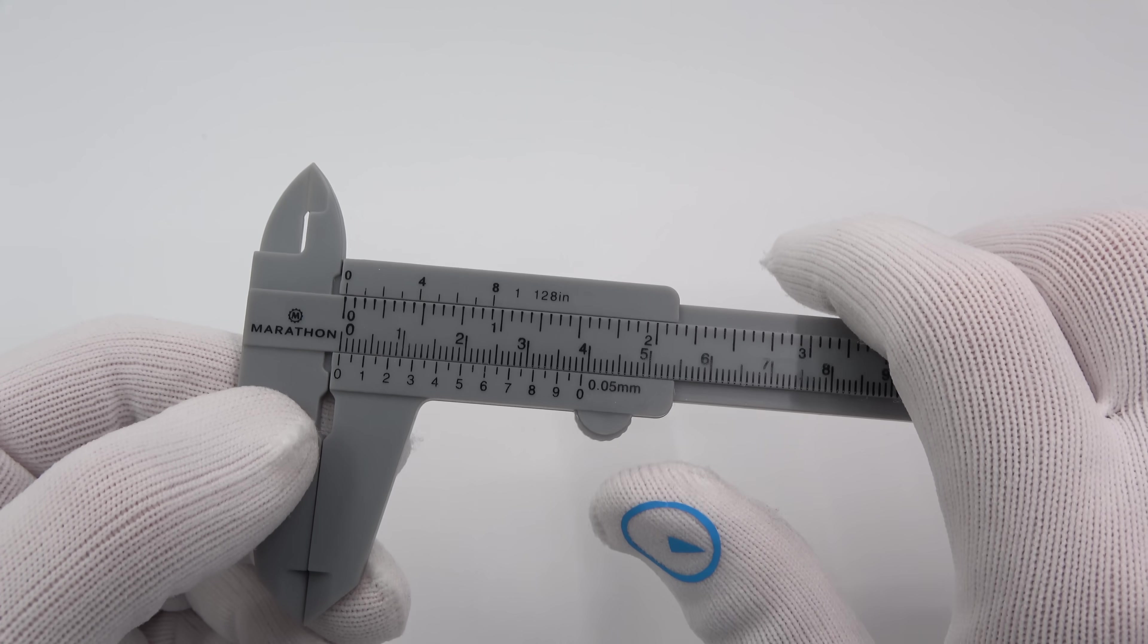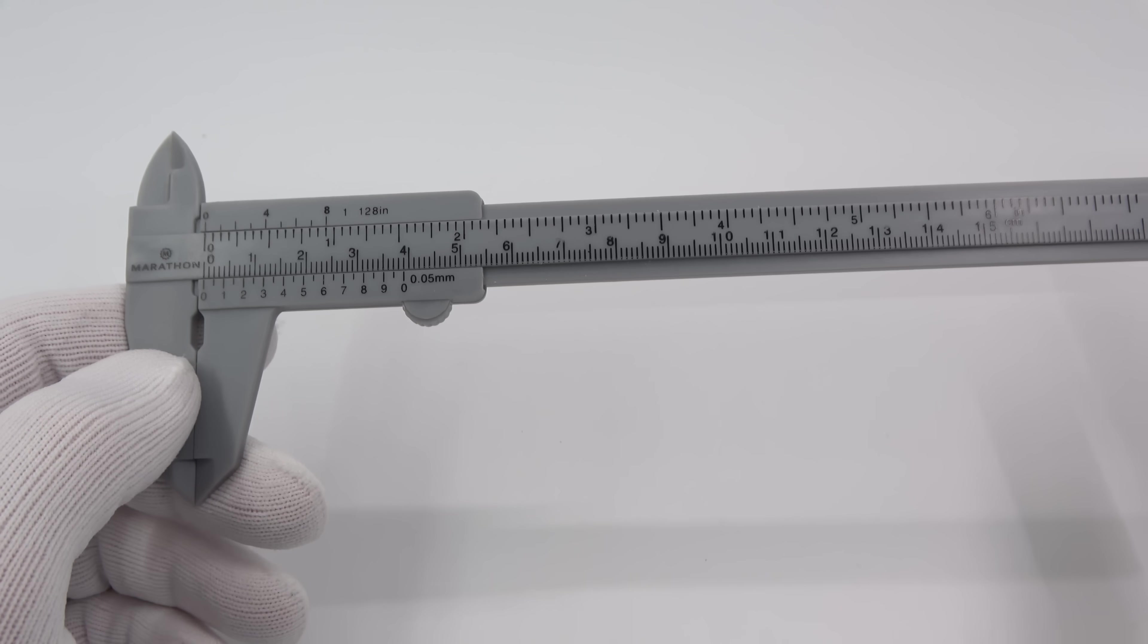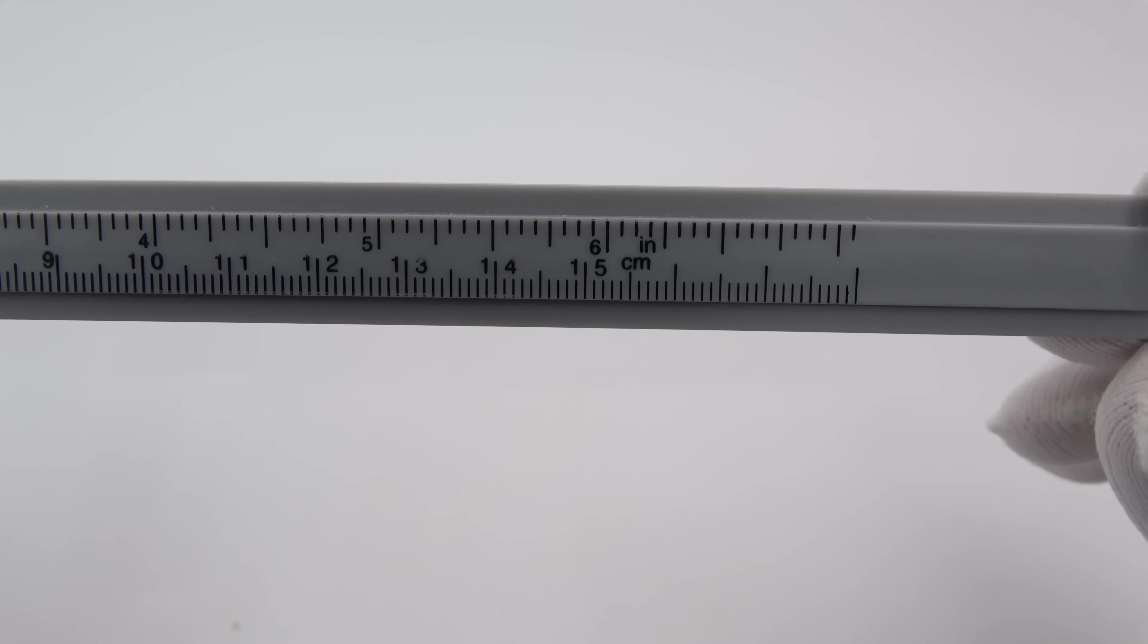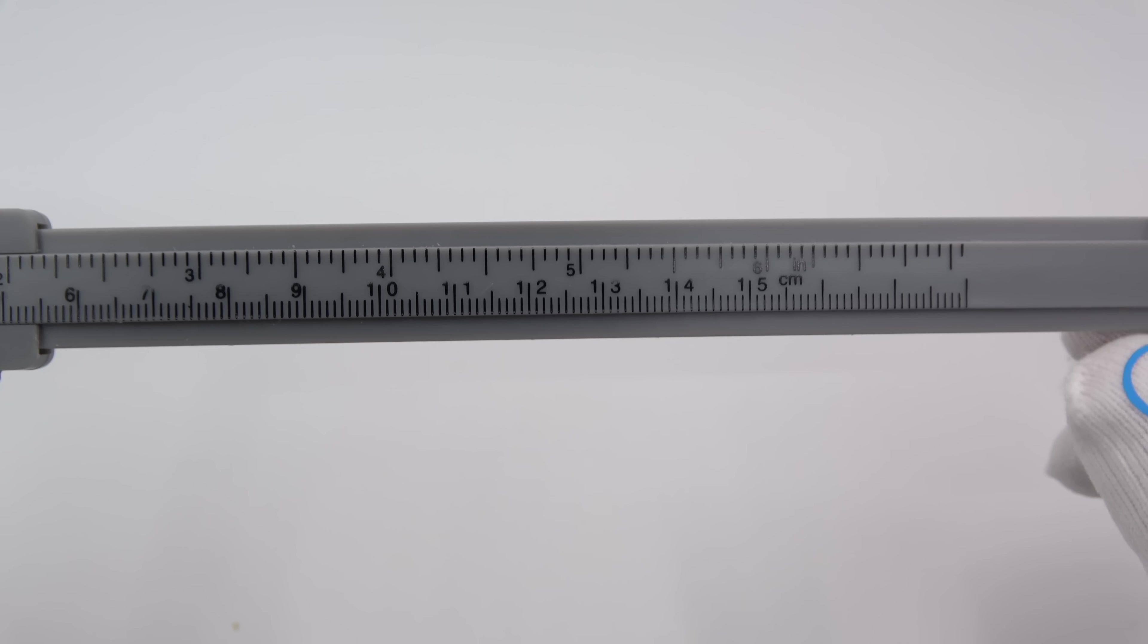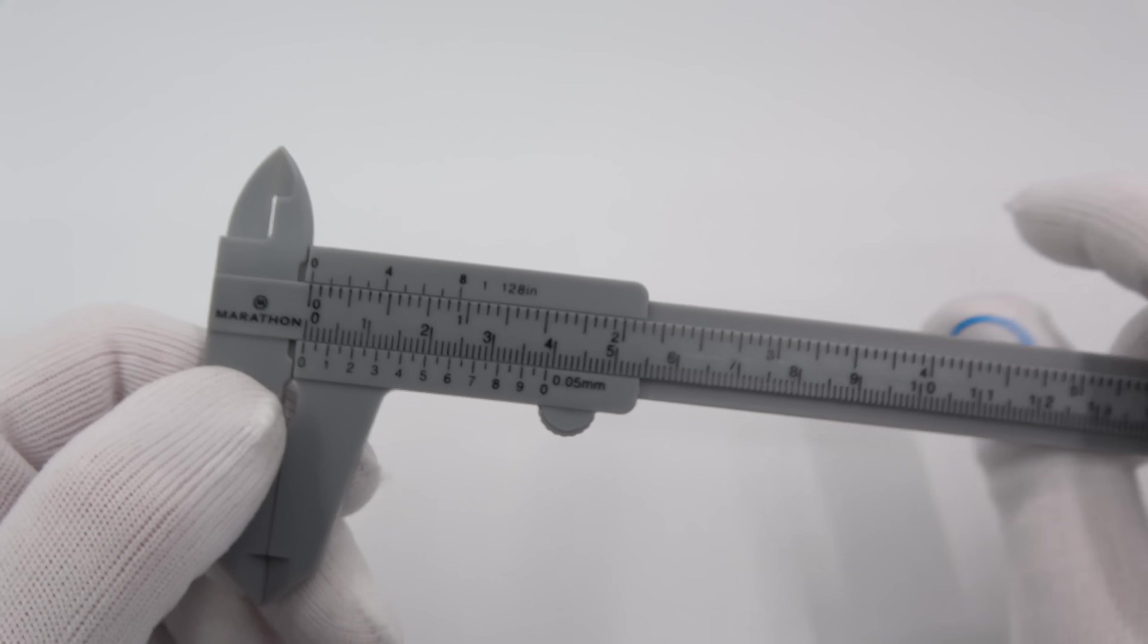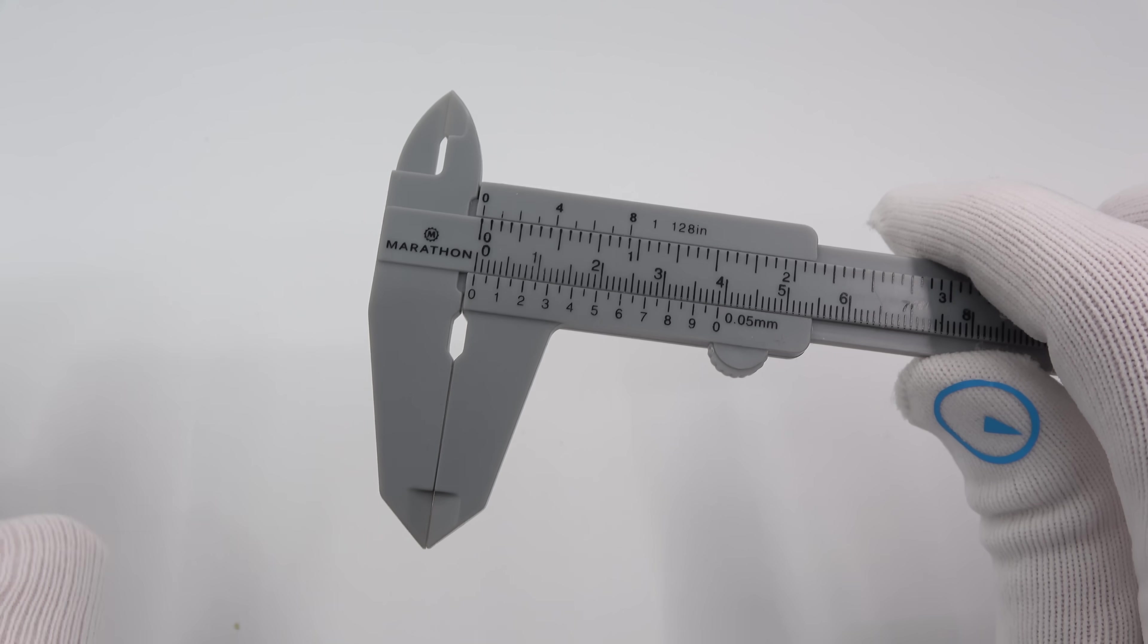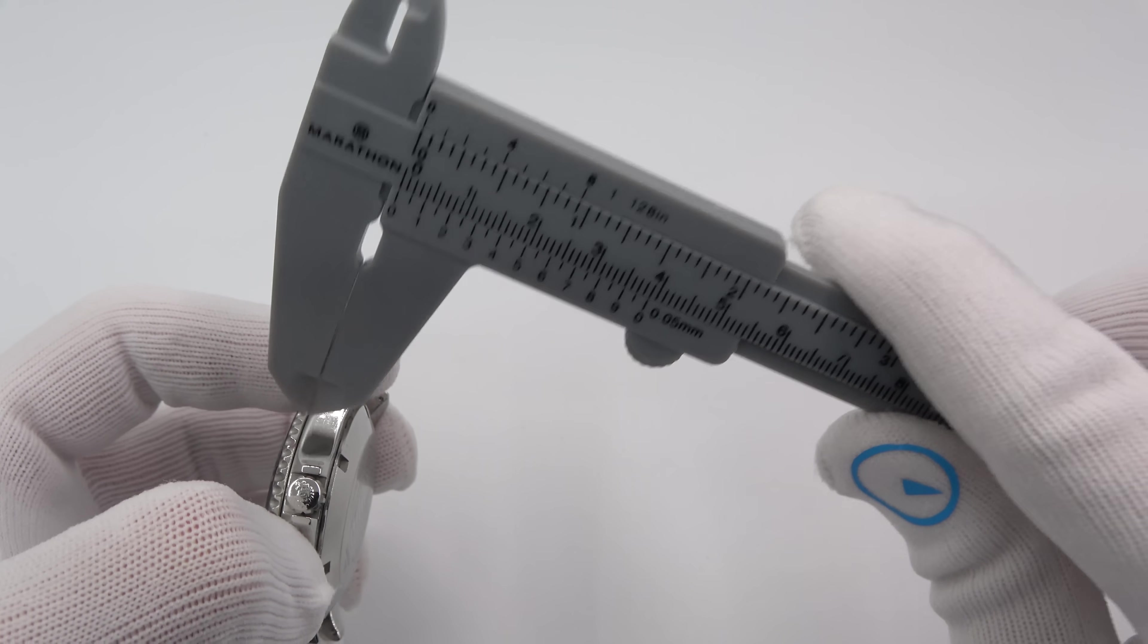So vernier calipers are very useful not just for watches. You can use them around the house. You have to measure anything under about six inches. They are very accurate even though they're plastic. Now back to what I was saying before, I prefer plastic for watches because no matter what you do you're never going to scratch the case.